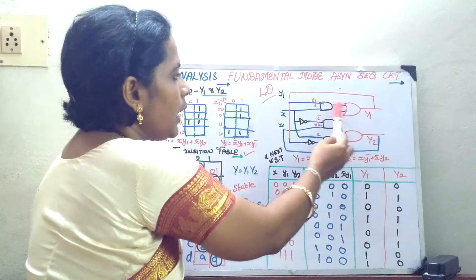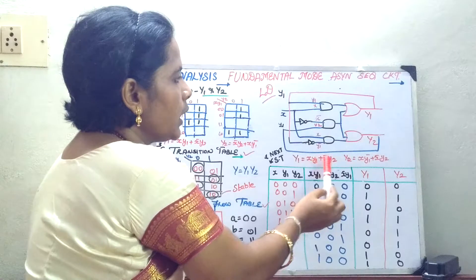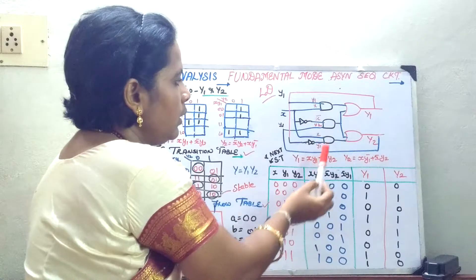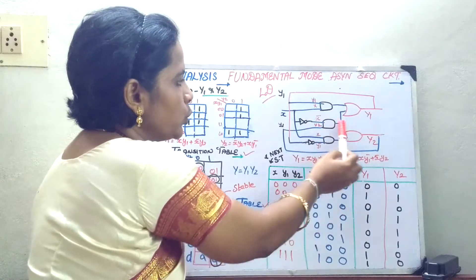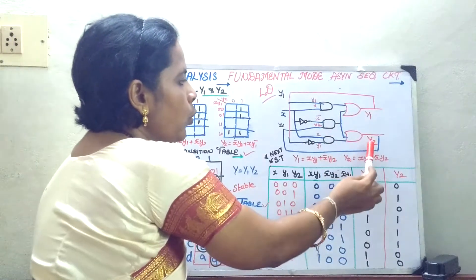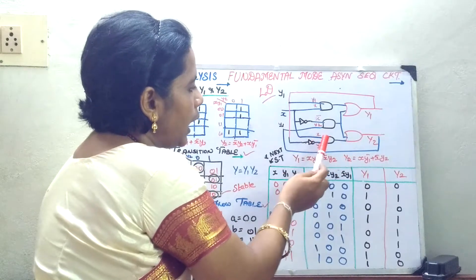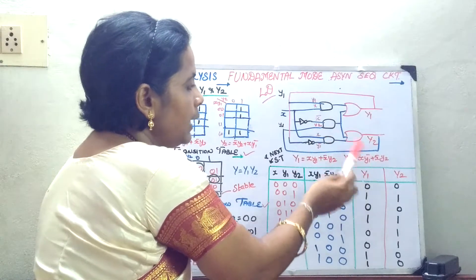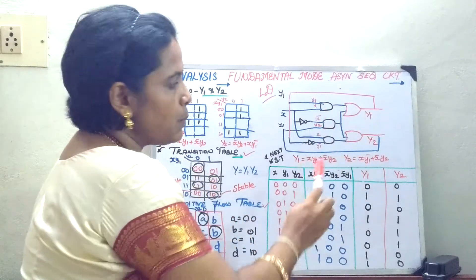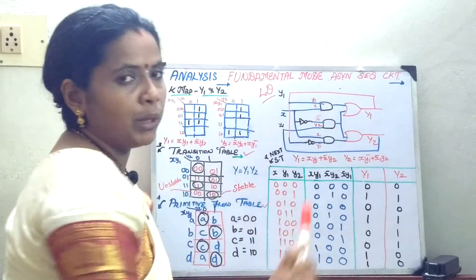What is your Y1? It consists of two AND gates and OR gates. So the expression is: X into Y1, then X bar into Y2 — this completes your Y1 expression. Now we will move on to Y2. Y2 contains: X into Y1 bar, and X bar into Y2. So the Boolean expressions have been framed.